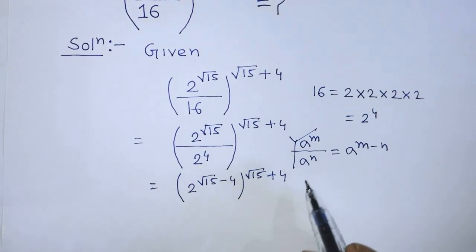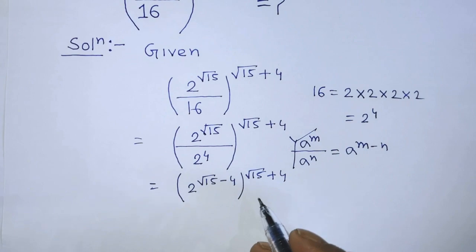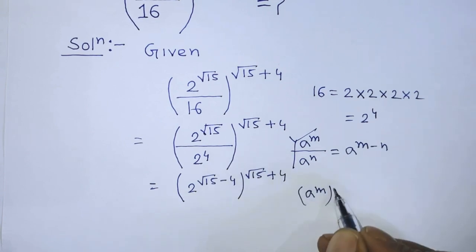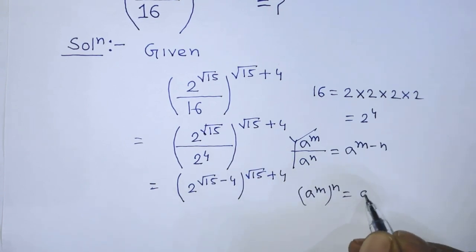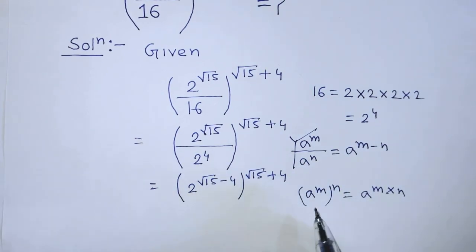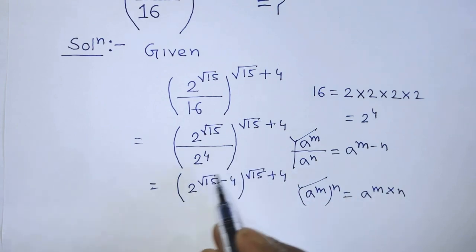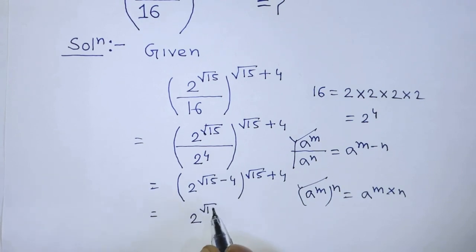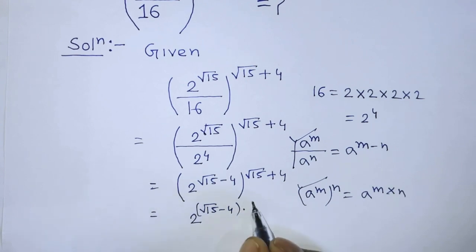To simplify this exponential form, we apply the formula: a to the power m, whole to the power n, equals a to the power m times n. According to this formula, we get 2 to the power the square root of 15 minus 4, times the square root of 15 plus 4.